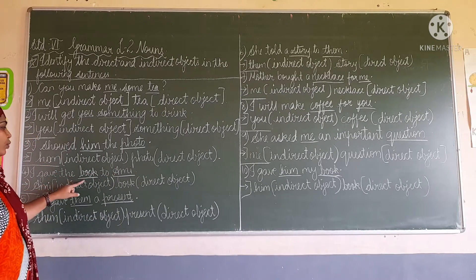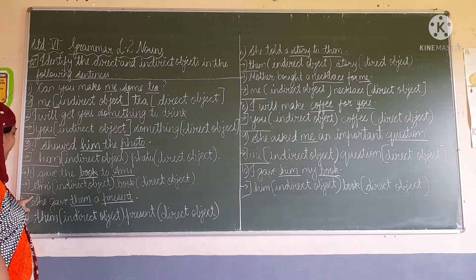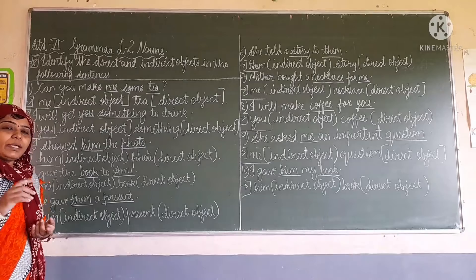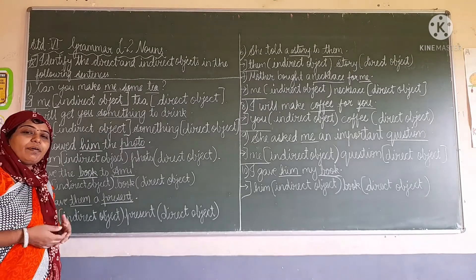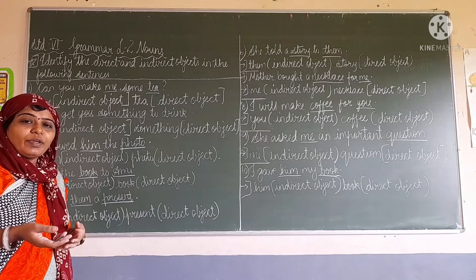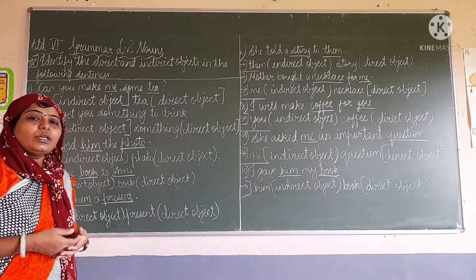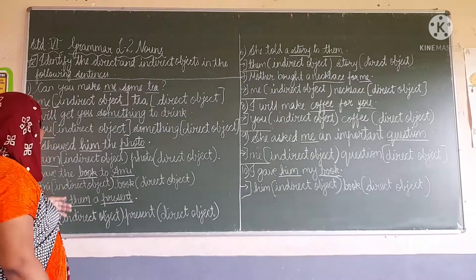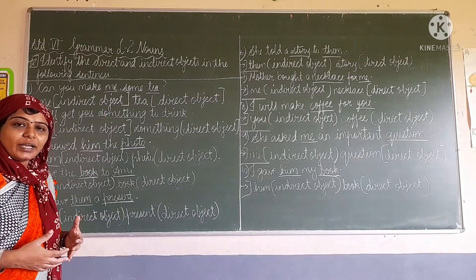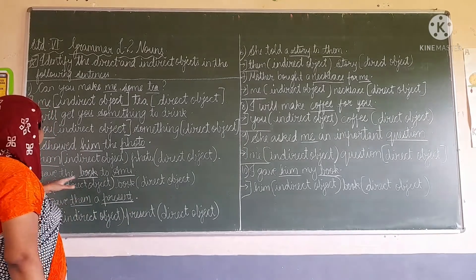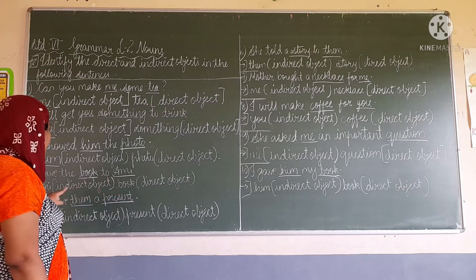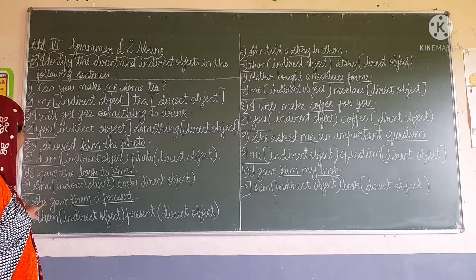I gave the book to my friend. Now, to identify the direct and indirect object: when we are identifying, we find the person or thing for whom or what the action is done. The direct object means the receiver of the action. So here, 'book' is the receiver of the action — that is the direct object — and 'me' is the indirect object.